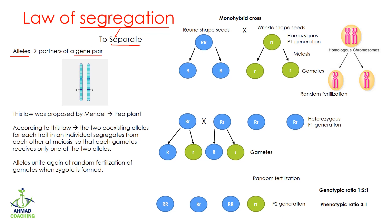Any characteristic is controlled by a gene. The gene has partners called alleles, which are present on homologous chromosomes. One chromosome comes from the mother and one from the father, so each homologous chromosome carries an allele for a particular trait. Here we can see small b on one and capital B on the other — these two are alleles for a particular trait.